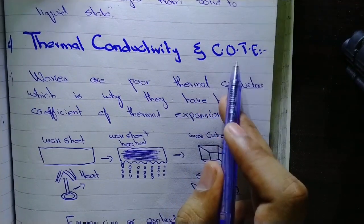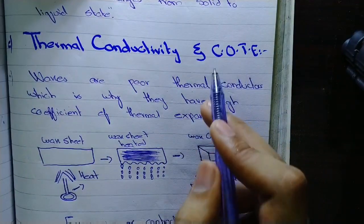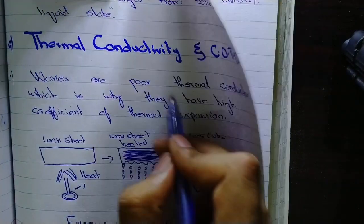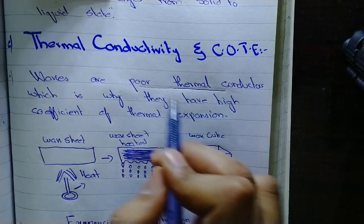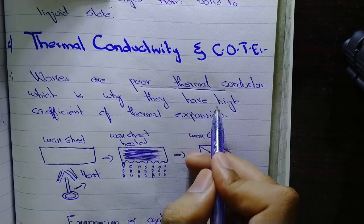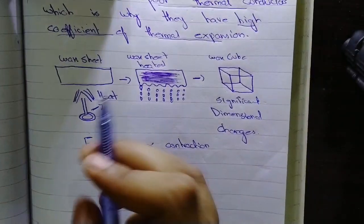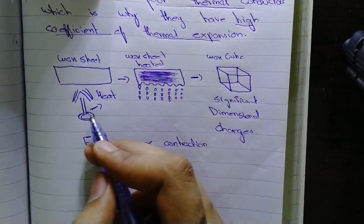COTE stands for coefficient of thermal expansion. Waxes are poor thermal conductors and that is why they have high coefficient of thermal expansion. Now look at this, what happens here is I am giving heat to a wax sheet.